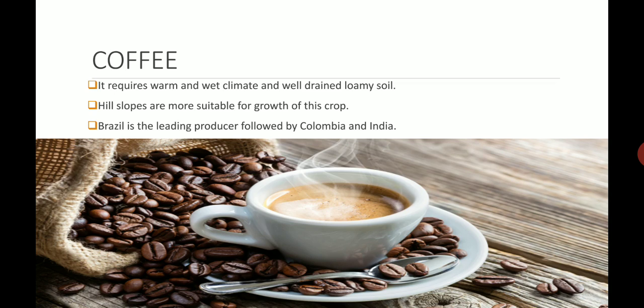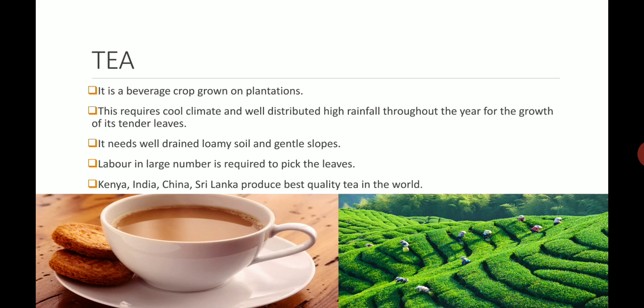Coffee requires a warm and wet climate and well-drained loamy soil to grow. Hill slopes are best suitable for coffee plant growth. Brazil is the leading producer of coffee, followed by Colombia and India. Here on the bottom of your screen you can see coffee beans as well as a cup of coffee which is ready to drink.